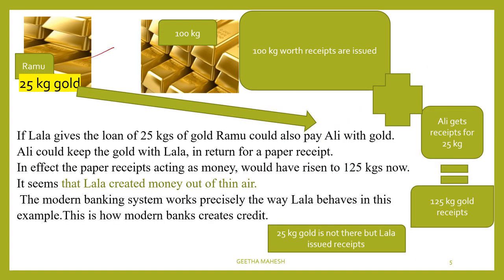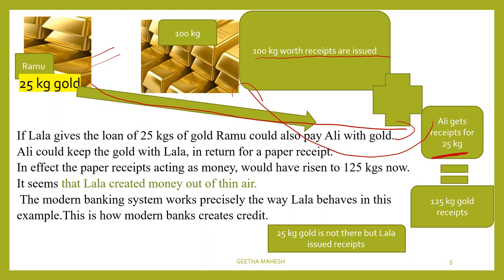Ramu gets 25 kgs of gold as a loan and gives this 25 kg of gold to Ali. Ali, also a villager, goes to Lala and deposits this 25 kg of gold. When Ali deposits the gold, Lala issues paper receipts worth 25 kg to Ali.